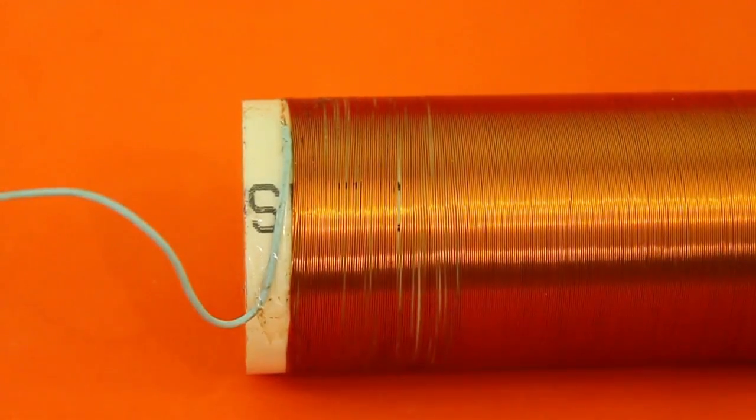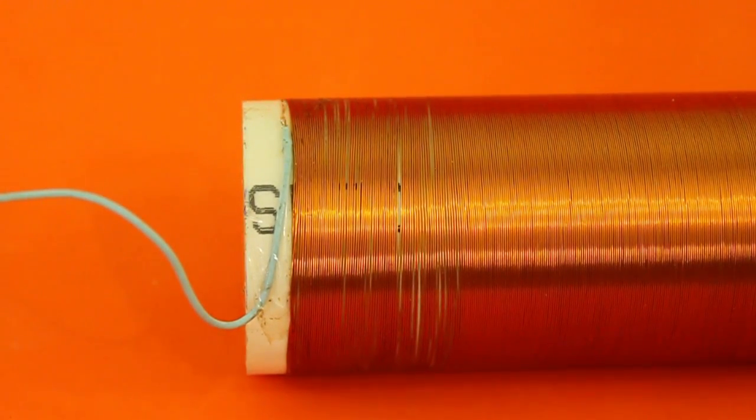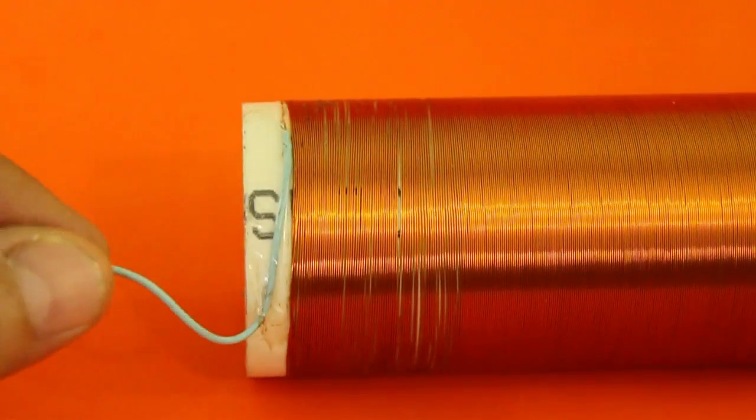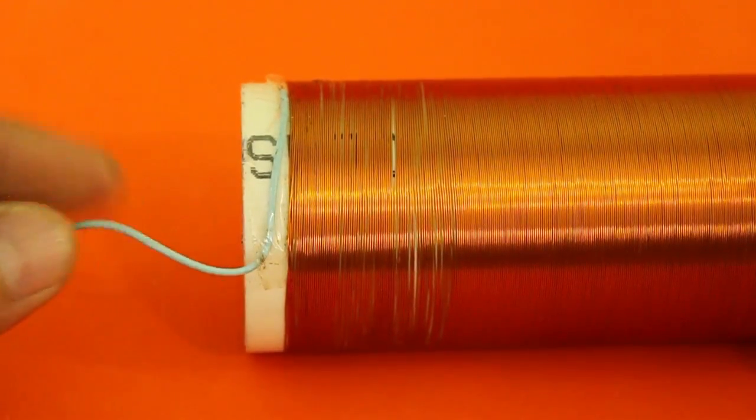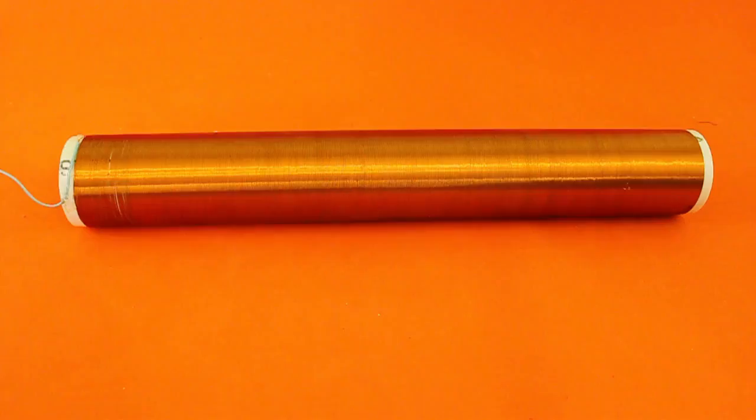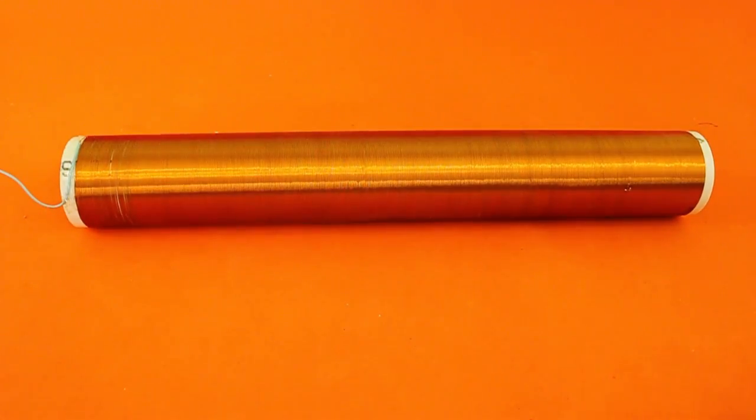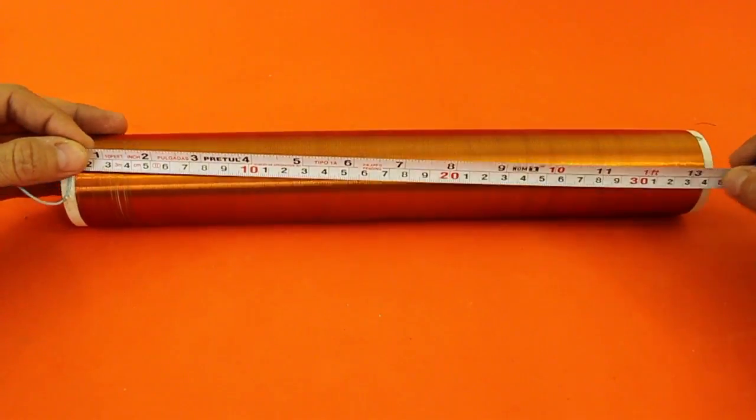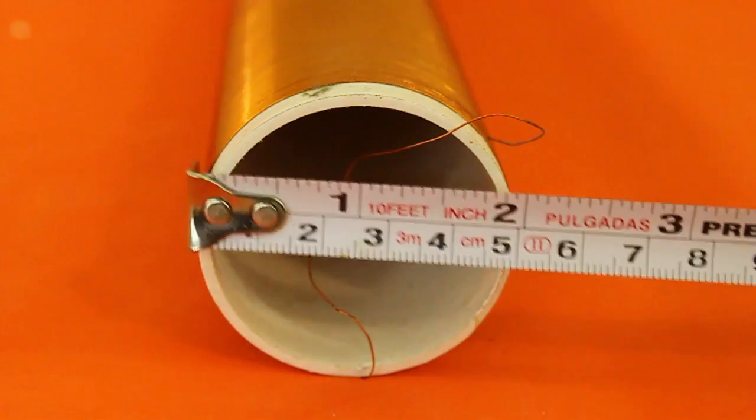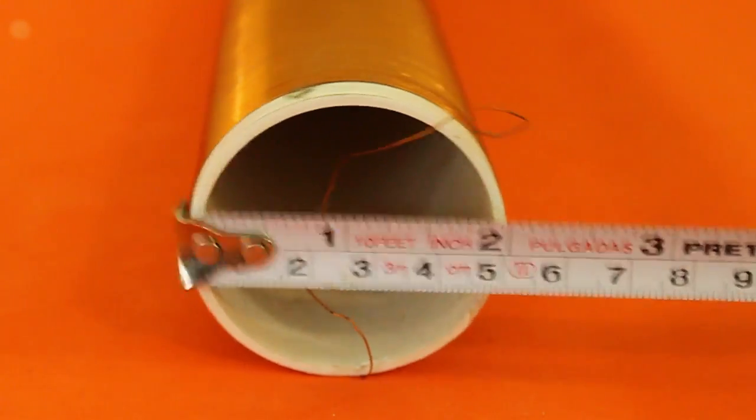It is convenient before you start winding that you solder a piece of thicker wire to the magnet wire because this will be connected to the rest of the circuit. My coil is made on a pipe of 35 cm in length and 5 cm in diameter.